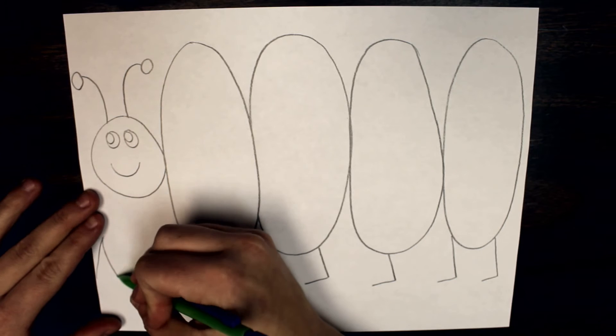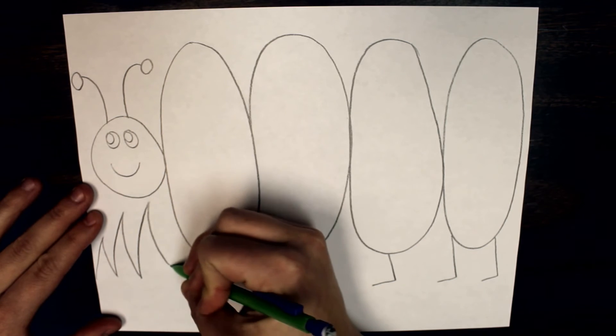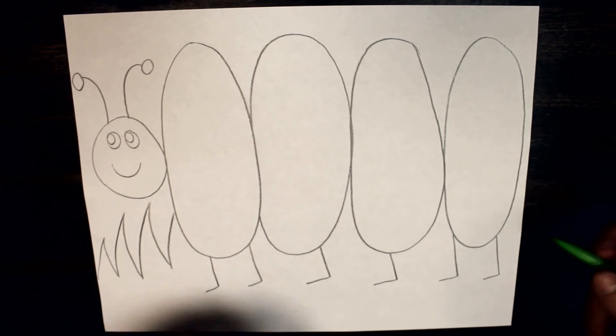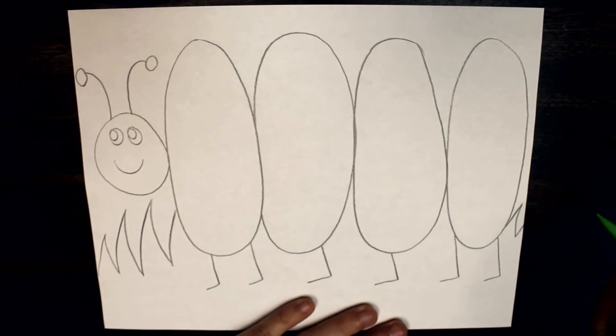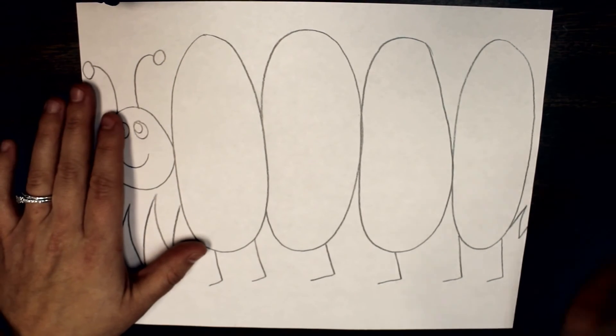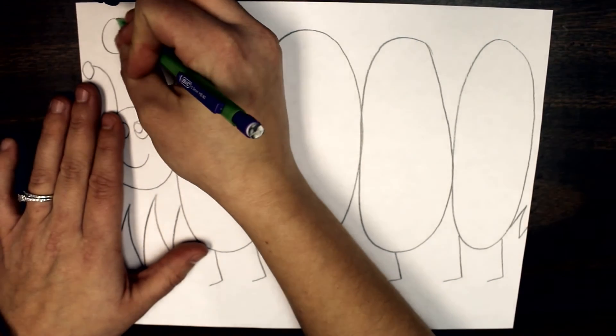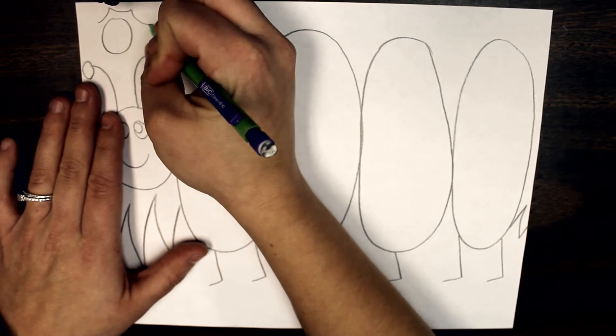Then we can start designing our background. Think about where your caterpillar is. I decided that my caterpillar was in a grassy area with a bright sunny sky and I drew a cloud too.